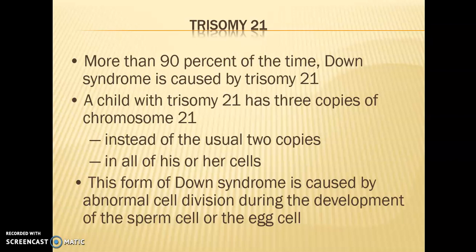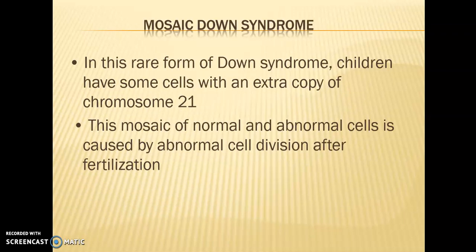In Mosaic Down syndrome, which is a rare form, children have some cells with an extra copy of chromosome 21 but it is a mixture of normal and abnormal cells. The key difference from Trisomy 21 is that in Mosaic Down syndrome, the abnormal cell division happens after fertilization, resulting in this mixture of normal and abnormal cells.